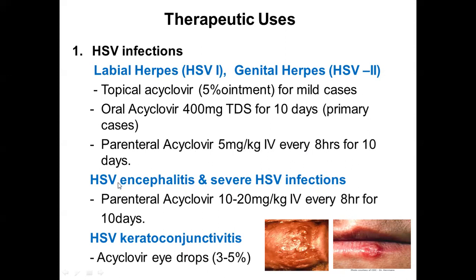For serious infections like HSV encephalitis and other severe infections, you have to use parenteral acyclovir again, but at a higher dose — 10 to 20 mg/kg IV every eight hours for 10 days. For HSV keratoconjunctivitis, acyclovir eye drops 3 to 5% are available. So acyclovir is available orally, for parenteral use, as well as topically as ointments and eye drops.